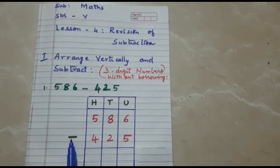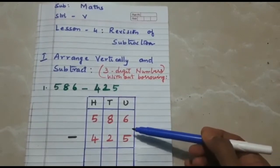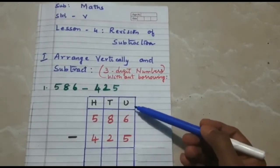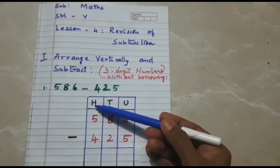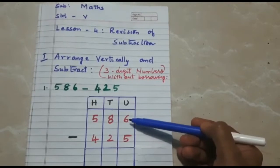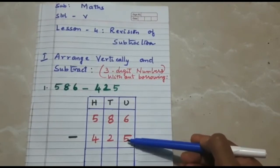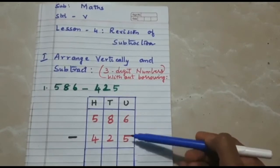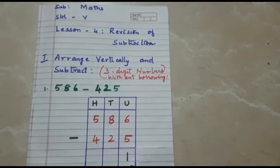Very important: you have to write the symbol or sign of subtraction. In subtraction, we are going to start from the units place, then move on to tens, then hundreds. Here, 6 minus 5 is 1.